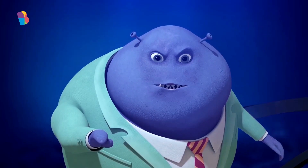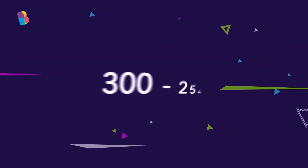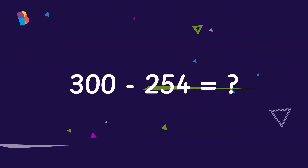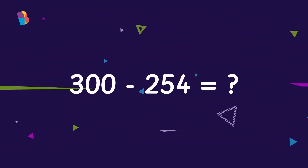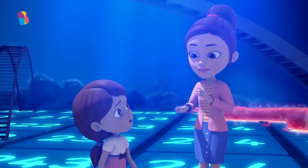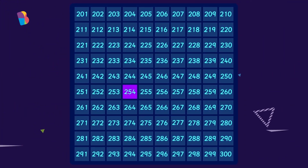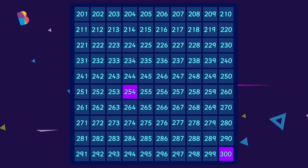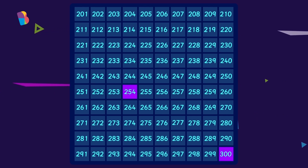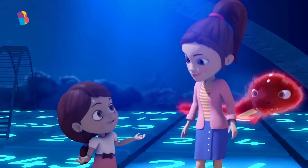Here is your next question. Take away 254 from 300. Ooh, those are big numbers, but I'll try. Now, taking away 254 from 300 means we have to find 300 minus 254. I should start at the smaller number, that's 254.